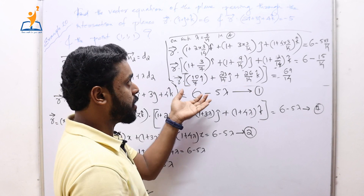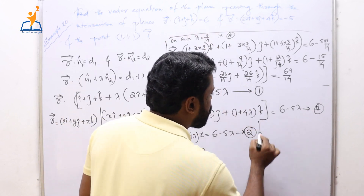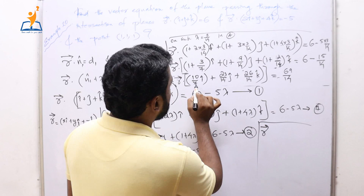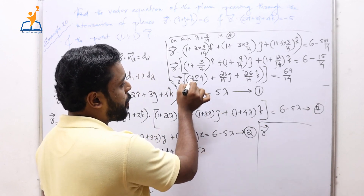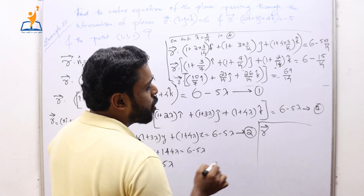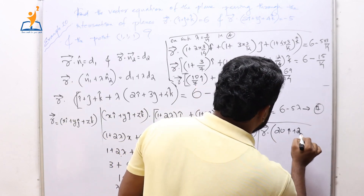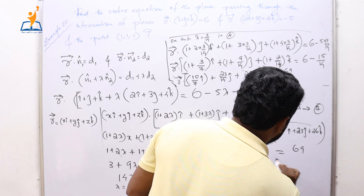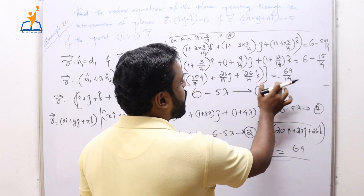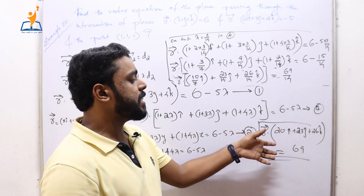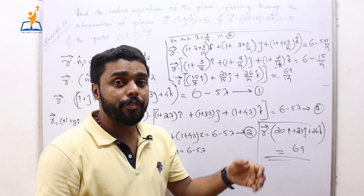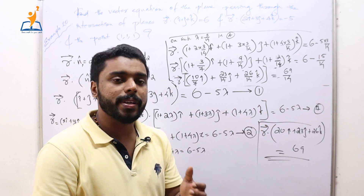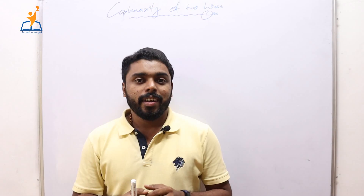So the final vector equation of the plane passing through the intersection of the two given planes is r · (20î + 23ĵ + 26k̂) = 69. We can also convert this to the Cartesian equation by substituting r = x·î + y·ĵ + z·k̂ into this equation.